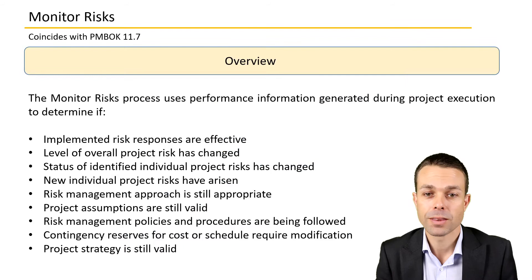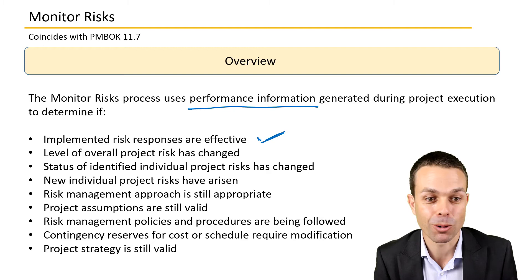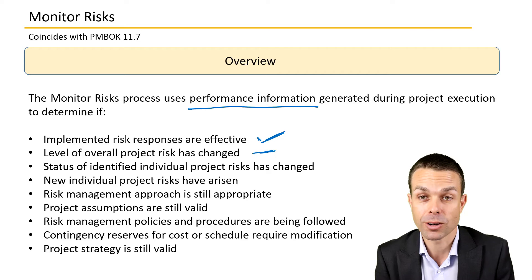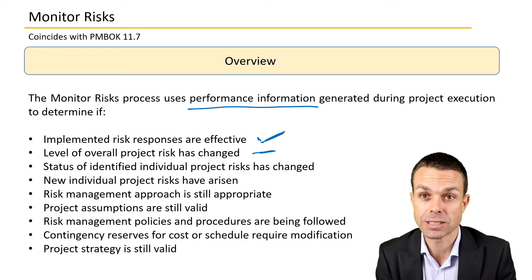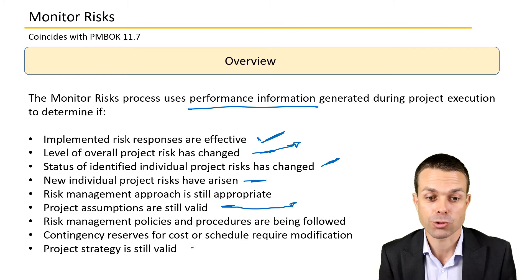Here's an overview of monitoring our risks. This process uses performance information generated during project execution to determine if implemented risk responses have been effective — are they doing what we wanted? The level of overall project risk — is it still within the risk threshold acceptable to our stakeholders? Has the overall level of risk changed? The status of identified individual project risks — has that changed? Any new additional risks? Have project assumptions changed or are they still valid? And is the project strategy still valid based on the risks that have happened?